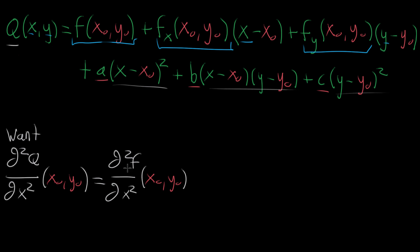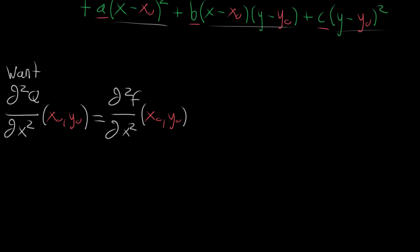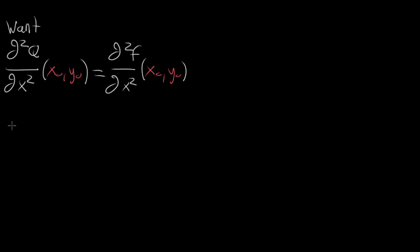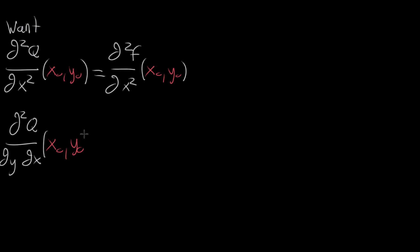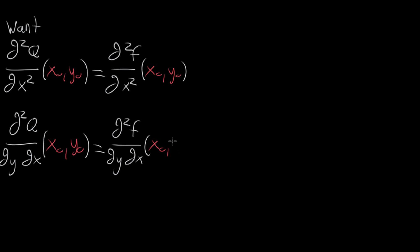We want this to be true not just for the second partial derivative with respect to x twice, but for the other ones too. For example, we could take the partial derivative first with respect to x and then with respect to y — the mixed partial derivative. We want it to be the case that when we evaluate that at the point of interest, it equals the mixed partial derivative of F with respect to x then y, evaluated at that same point.